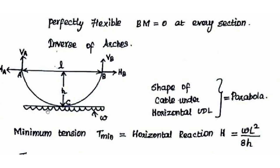When a horizontal UDL acts on a cable, the shape is a parabola. This can be compared to a simply supported beam with UDL — the shape of the cable corresponds to the bending moment diagram of a simply supported beam. If a UDL acts, the shape is parabolic; if two-point loads act, the shape is trapezoidal.